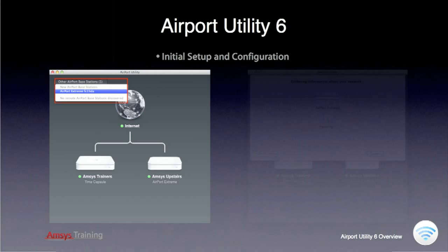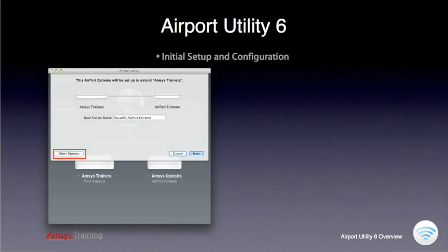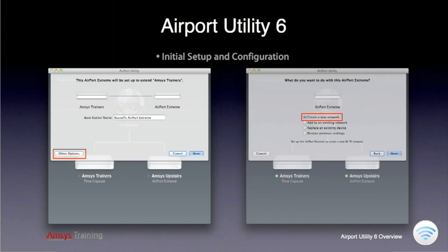Once you select the new Base Station, the utility will start up the Setup Assistant and assess your existing network to give you the options on how to best configure the new Base Station. In this example, with a current Base Station already configured on the network, the Setup Assistant asks if you would like to extend this existing network using the new Base Station. This can be useful for extending the range of your wireless network by joining multiple Base Stations together. For now, we will look at setting up a new wireless network, so we're going to select other options to see the full choices available.